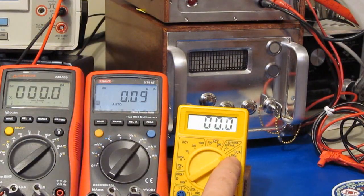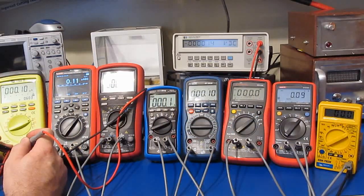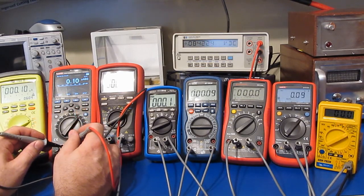Again, this is a manual ranging meter and the lowest range is 200 microamps for this, so it looks like about 12 microvolts. So it doesn't look like that switched.